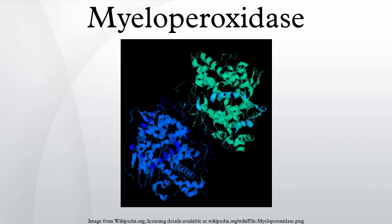Myeloperoxidase is a peroxidase enzyme that in humans is encoded by the MPO gene on chromosome 17. MPO is most abundantly expressed in neutrophil granulocytes and produces hypochlorous acids to carry out their antimicrobial activity. It is a lysosomal protein stored in azurophilic granules of the neutrophil and released into the extracellular space during degranulation.